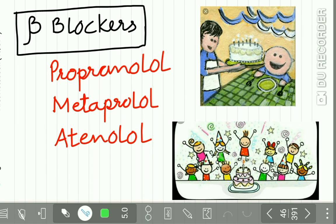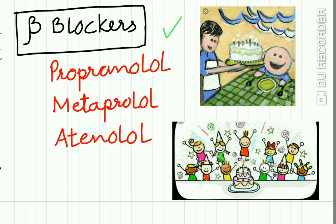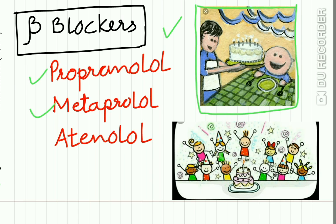Go back to the chapter on anti-adrenergic drugs for details on beta blockers. The mnemonic used there is 'More Bakes Excellent Cake On Birthdays,' which enumerates drugs like propranolol, metoprolol, and atenolol.